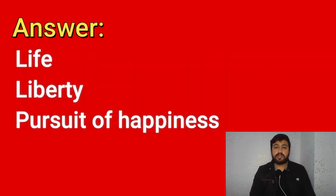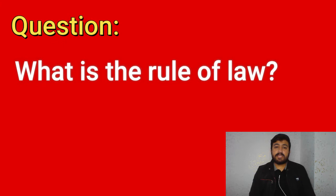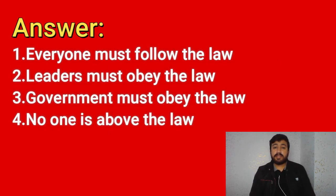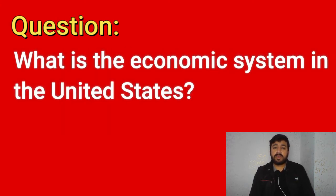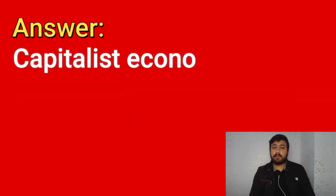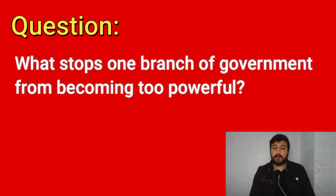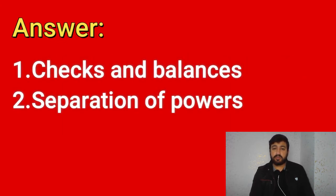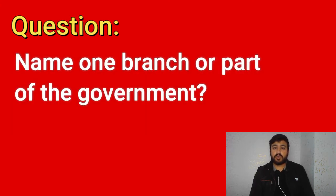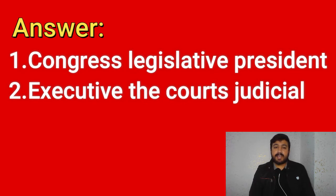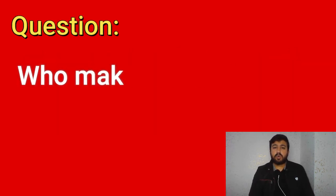What is freedom of religion? You can practice any religion or not practice a religion. What are two rights in the Declaration of Independence? Life, liberty, and pursuit of happiness. What is the rule of law? Everyone must follow the law, leaders must obey the law, government must obey the law, no one is above the law. What is the economic system in the United States? Capitalist economy, market economy. What stops one branch of government from becoming too powerful? Checks and balances, separation of powers.